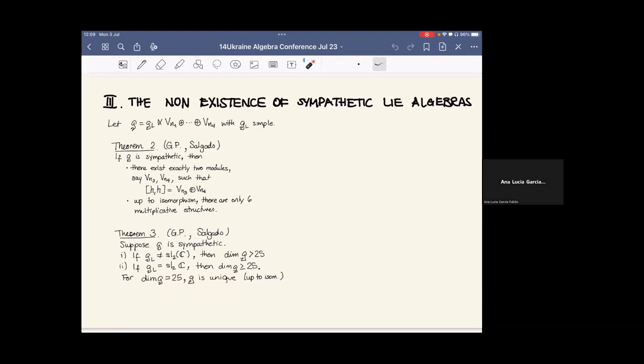Now, theorem two, theorem three part one, and most of part three, most of theorem three part two, were theoretical results. We have our theorems, but with all the theorems that we have, we still have four cases to check directly. For this, we developed an algorithm that allowed us to check whether the remaining cases were sympathetic or not. I'll describe those now.